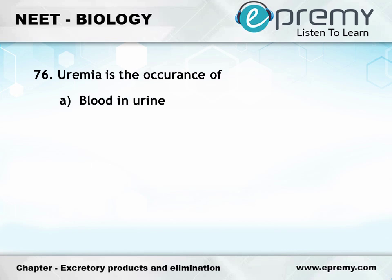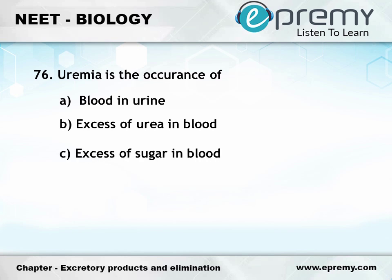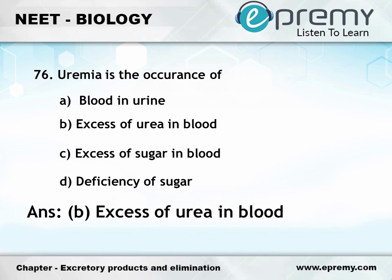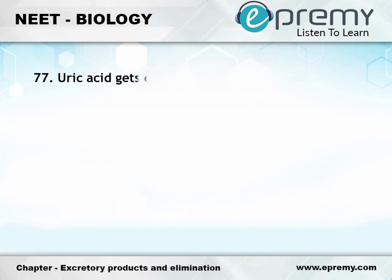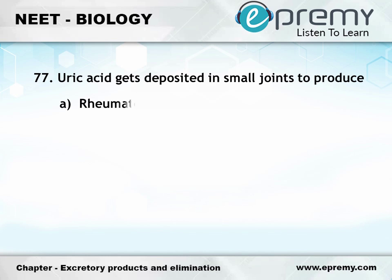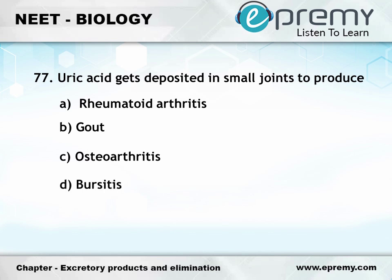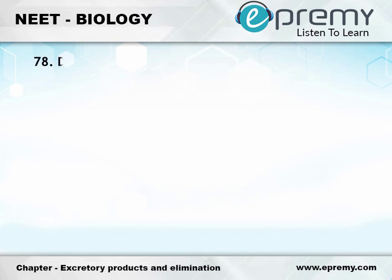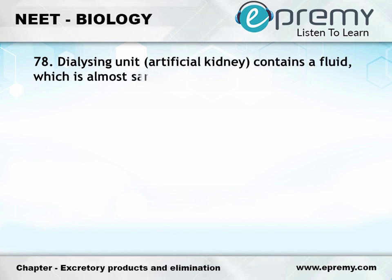Question number 76: Blood in urine is called Hematuria. Question number 77: Uric acid gets deposited in small joints to produce — Option A: Rheumatoid arthritis, Option B: Gout, Option C: Osteoarthritis. The answer is Option B: Gout.